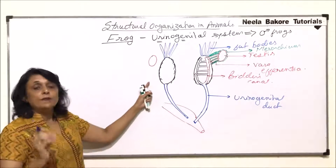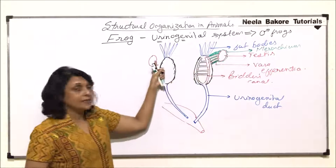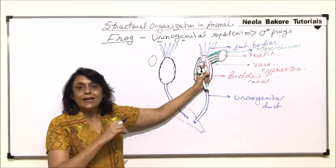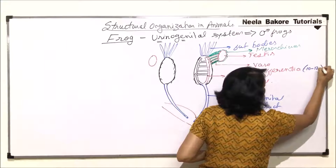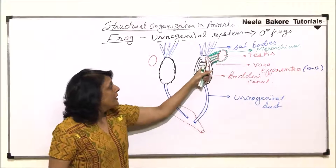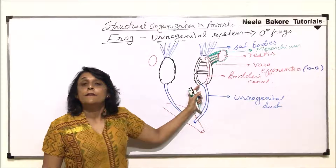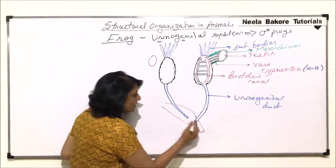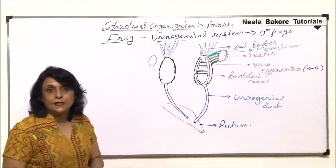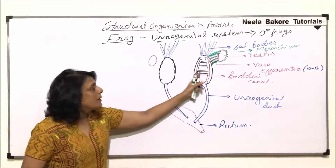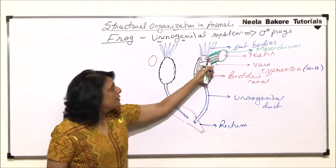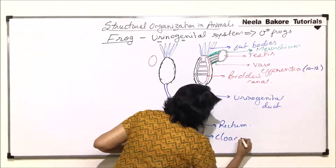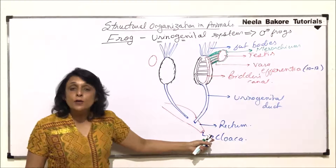When we talk about the reproductive part: the testes are connected to the kidneys via mesorchium. Sperms are taken by 10 to 12 fine ducts (vasa efferentia) per testis, which open into Bidder's canal. This joins with the urine duct to form the urinogenital duct, which opens into the rectum. The rectum carries undigested food, nitrogenous waste, and sperms — all released through the cloaca.